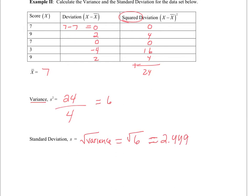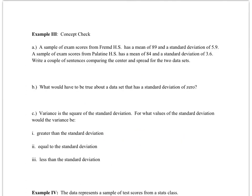So on average, my data points are 2.449 units away from my mean of 7. In example 3, we are given a scenario. A sample of exam scores from Fremd High School has a mean of 89 and a standard deviation of 5.9. A sample from Palatine has a mean of 84 and a standard deviation of 3.6. Write a couple of sentences comparing the center and spread for the two data sets. Fremd has a higher average, but also a larger standard deviation, while Palatine has a smaller average but a smaller standard deviation.